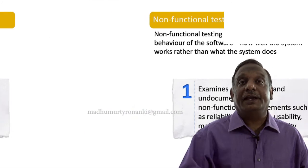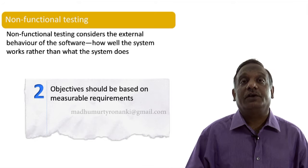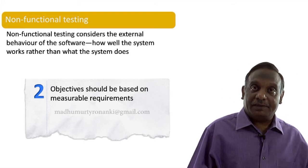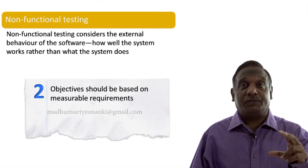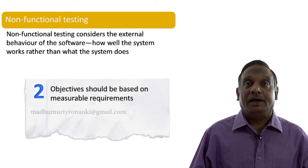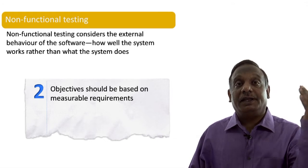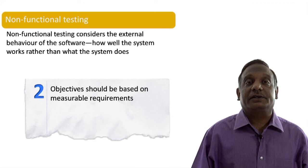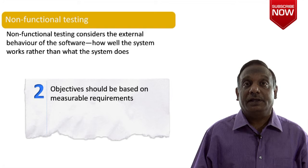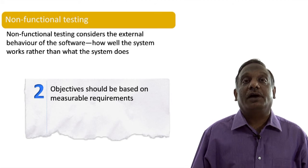The second point about non-functional testing is that the objective is based on measurable requirements specified in your requirement document. Every requirement document will have one aspect called functional requirements and another aspect called non-functional requirements, specified in a measurable manner. For example, a performance requirement will specify very clearly that under a particular CPU and memory load, the response time should be less than a certain value. When performing non-functional testing, we measure and compare whether the actual measurements meet the requirements.